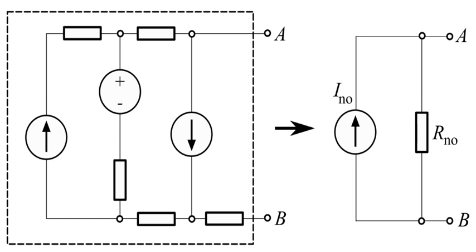And the equivalent resistance looking back into the circuit is RNO = 1kΩ + (2kΩ||(1kΩ + 1kΩ)) = 2kΩ.